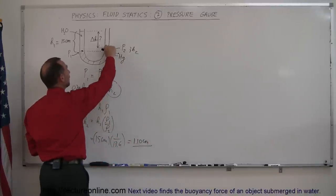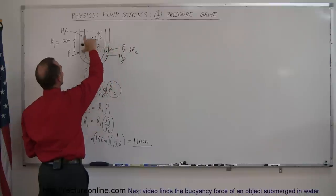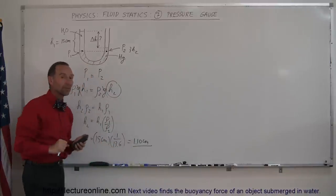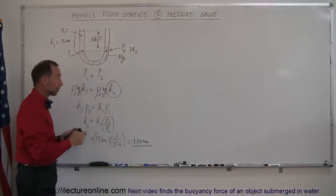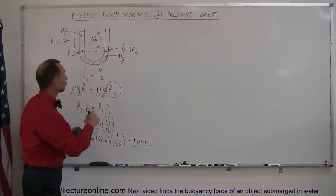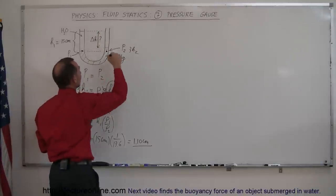Which means the height of mercury that gives me the same pressure as the 15 centimeters of water is 1.1 centimeters. That's of course why they use mercury in barometers, because you don't need as much of it to be able to measure the pressure.